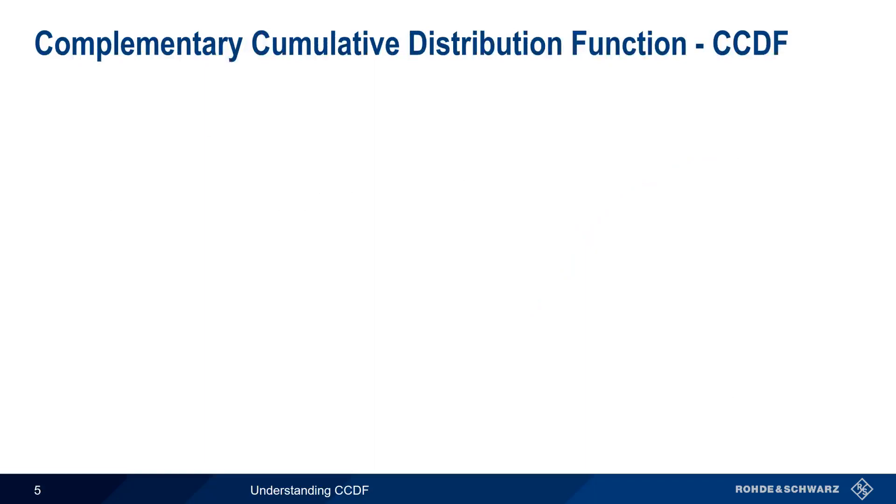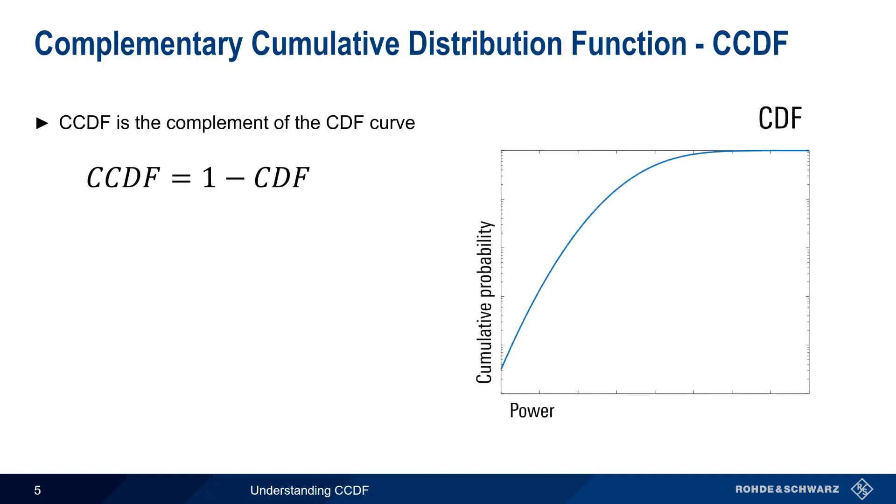Using the Cumulative Distribution Function, we can now compute something called the Complementary Cumulative Distribution Function, or CCDF. As the name implies, CCDF is the complement of the CDF curve. This is a fancy way of saying that the CCDF curve values are just 1 minus the CDF curve values. Let's pick a point on the CCDF curve. Here, a power value of plus 10 dBm corresponds to a probability of only 0.05. This means that our signal power reaches plus 10 dBm or higher only 5% of the time.